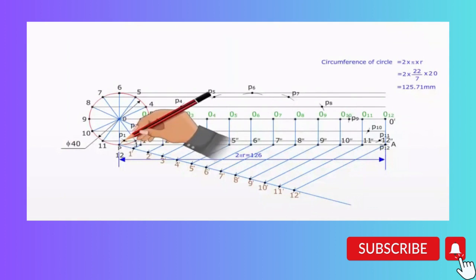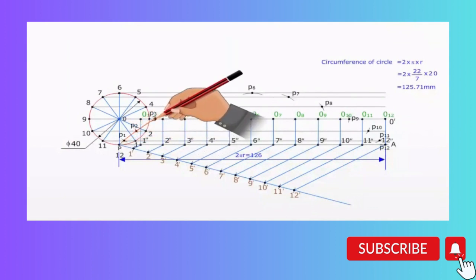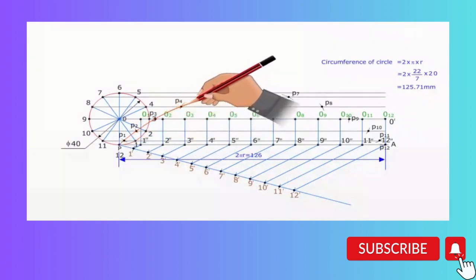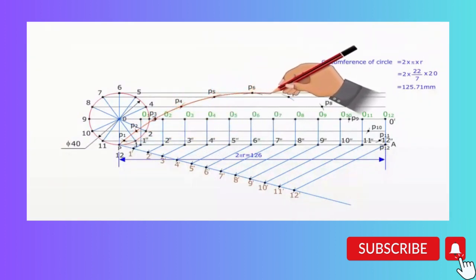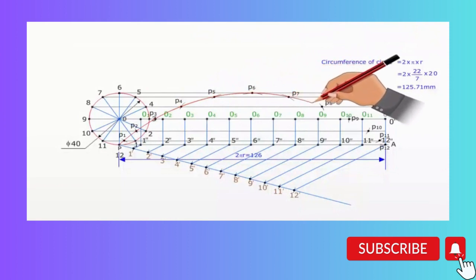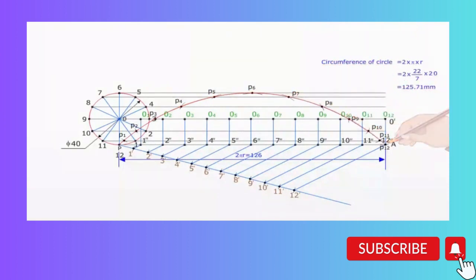A smooth curve passing through points P1, P2, P3, P4, P5, P6, P7, P8, P9, P10, P11, and P12 is the required cycloid.